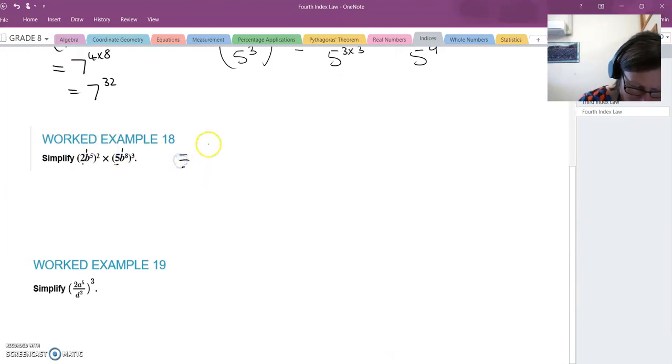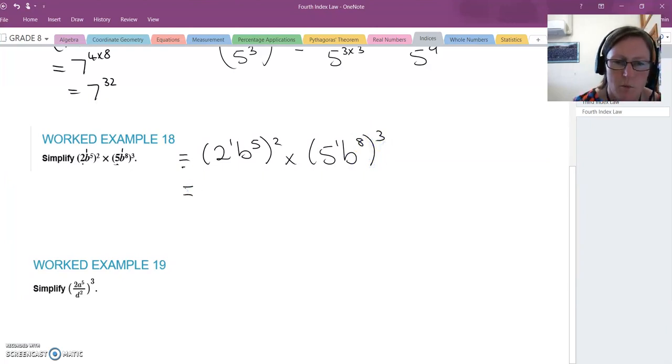So in other words, I've got in that bracket, 2 to the power of 1, b to the power of 5 squared, and in the next brackets, 5 to the power of 1, b8 cubed. I like to put that 1 there because then it reminds me that I have to go, 2 to the 1 times 2, multiplying these powers together, b to the 5 times 2, and then for my next lot of brackets, it's 5 to the 1 times 3, b to the 8 times 3.